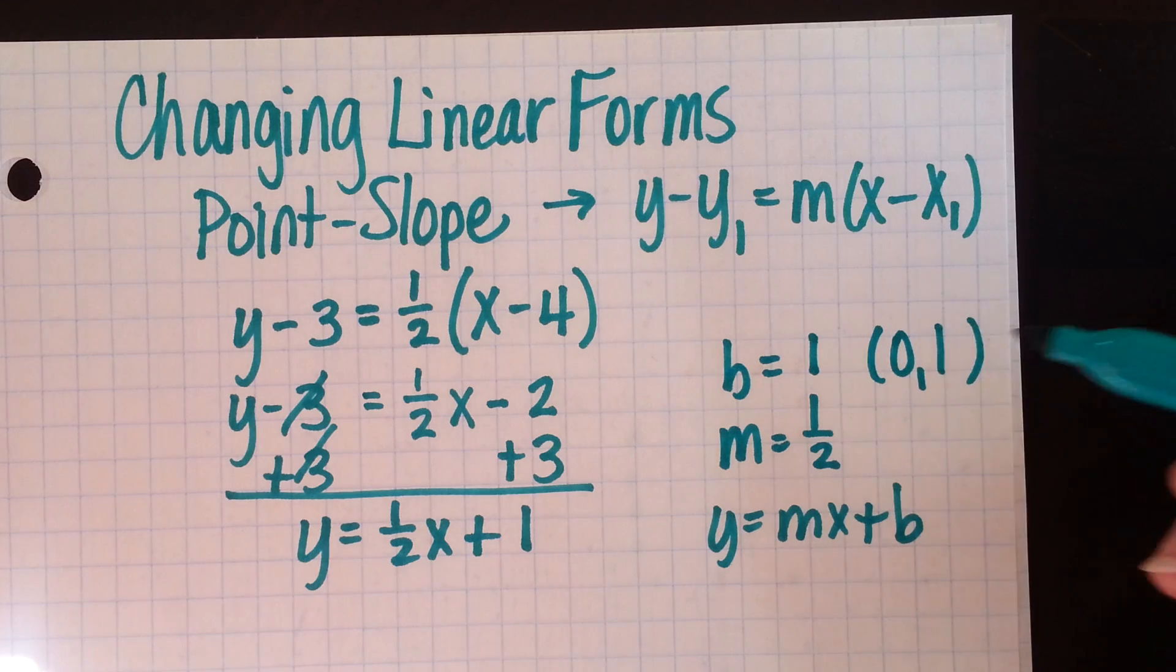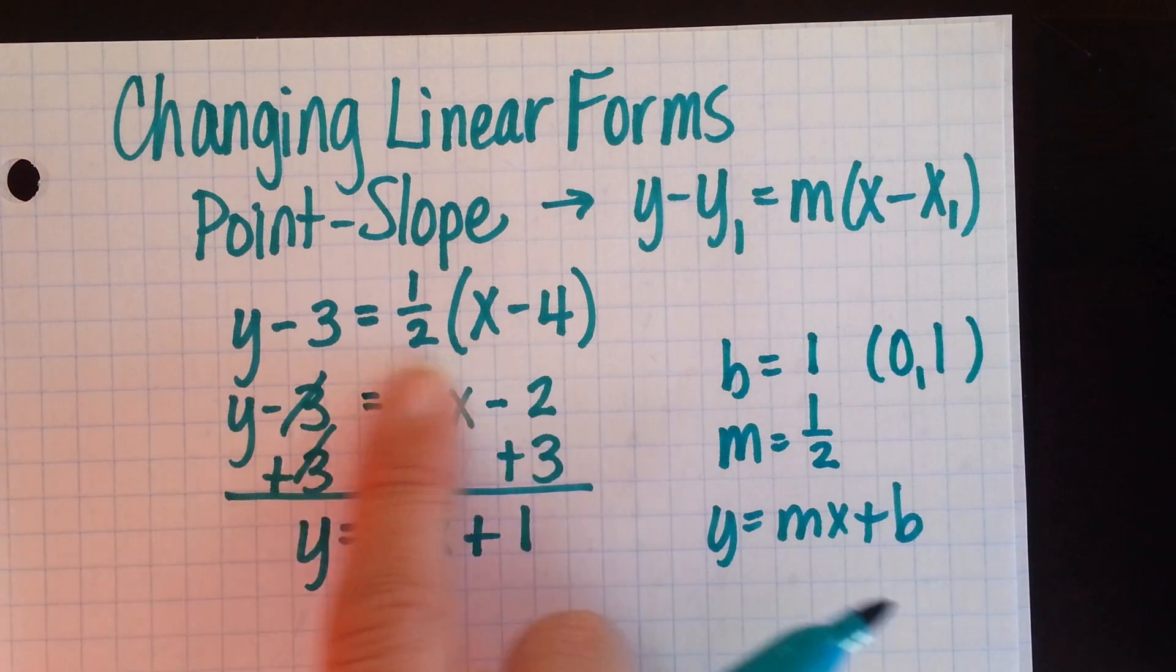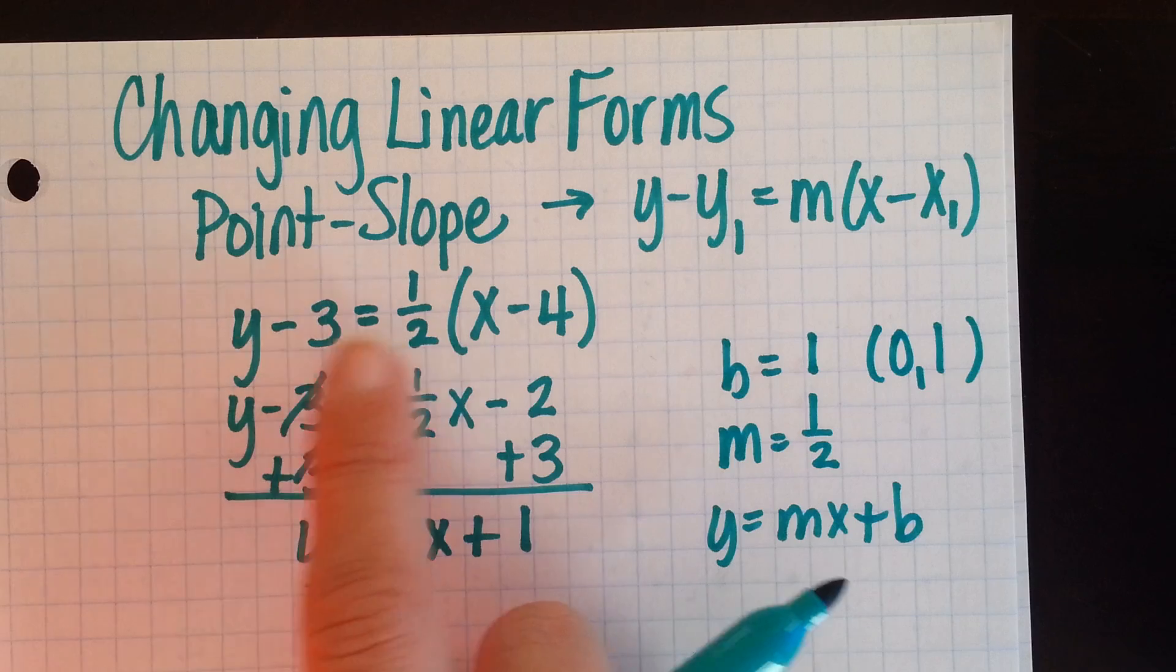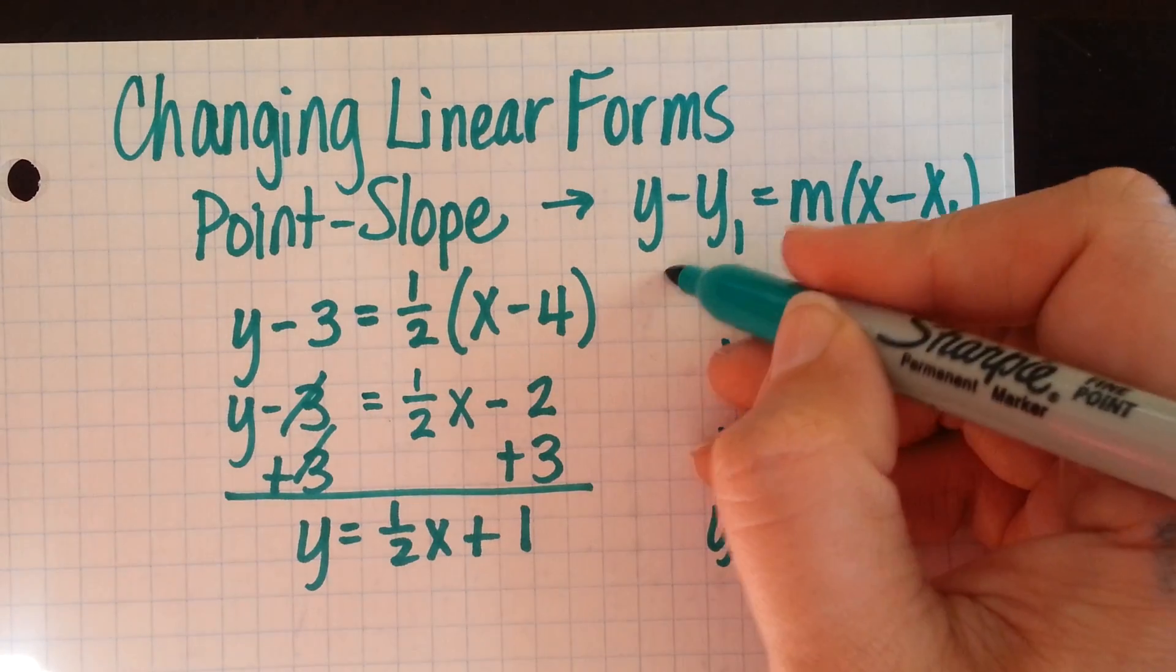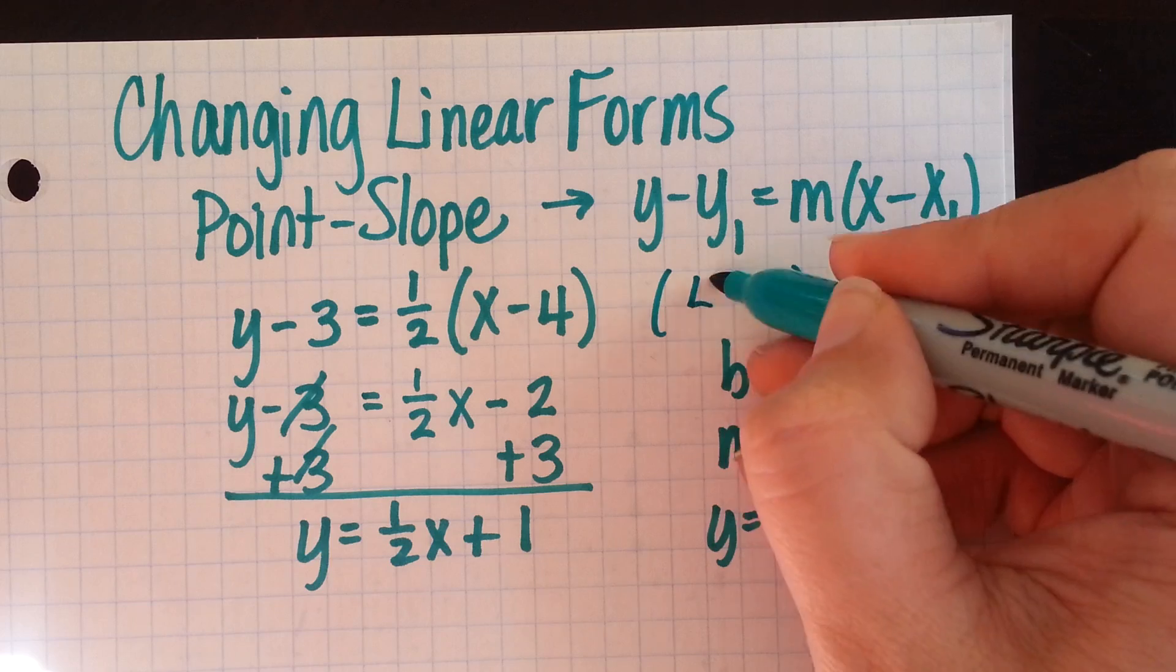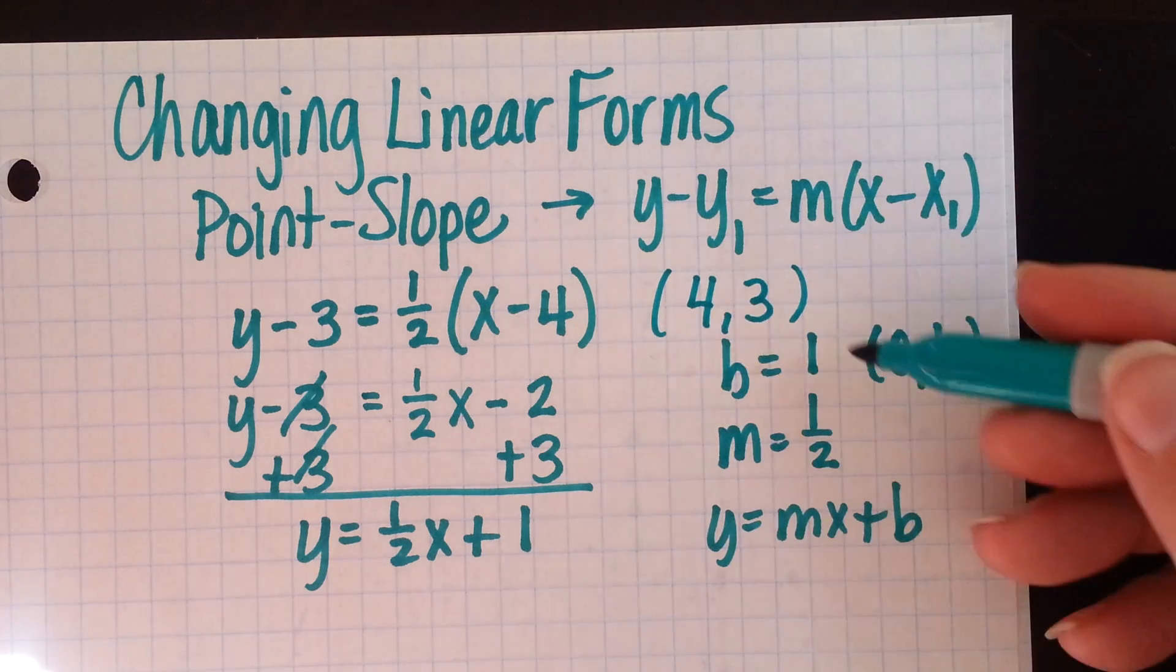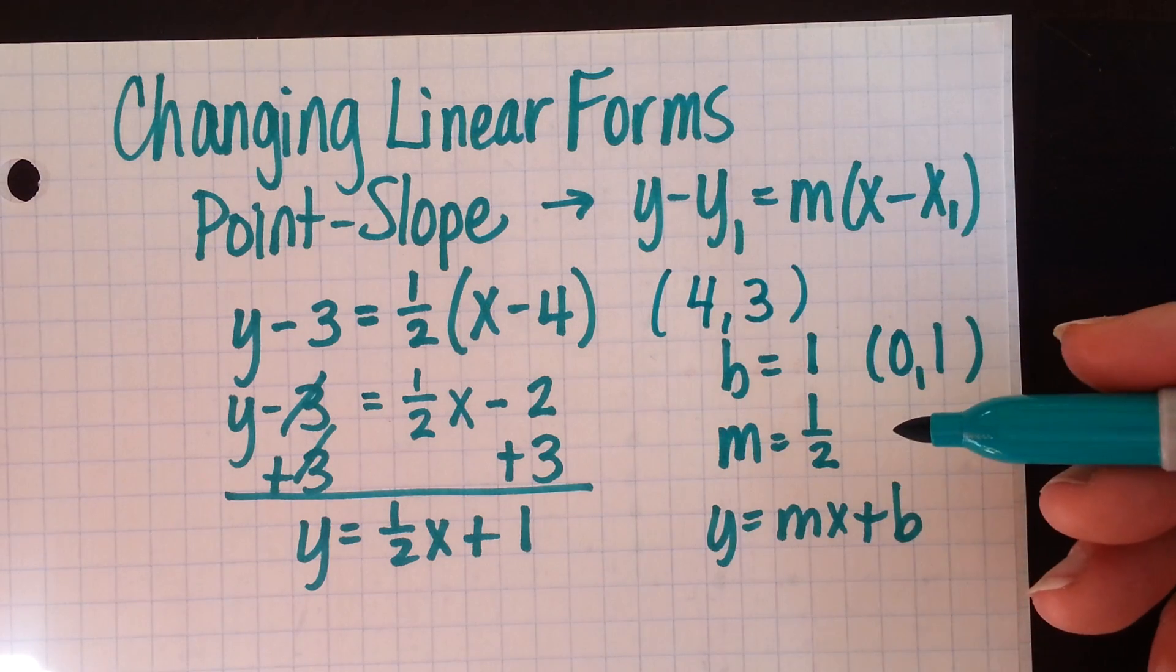Remember, a y-intercept has an x of 0. Now, when we were first looking at point-slope form, we already knew the slope was 1 half. We also knew a specific point. That specific point was 4, 3. So this is just some information that we've gathered so far about the different forms.